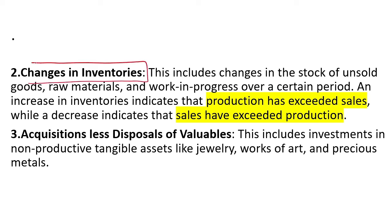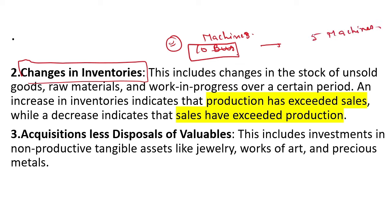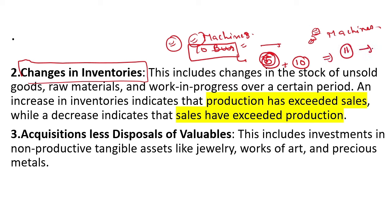Change in Inventory: for example, a transportation company has 10 machines, but that year only 5 machines are utilized. So the rest — 5 machines — will be in stock or inventory. This tells us that production has exceeded sales. If sales were higher, all 10 machines would be needed. Those 5 machines sitting in inventory will be sold next year. If instead 11 or more machines are needed, then sales are exceeding production.